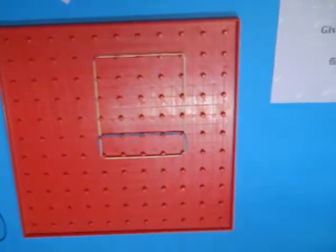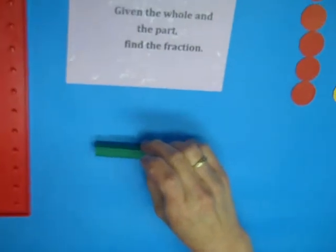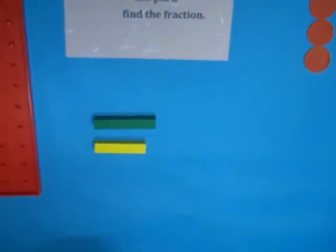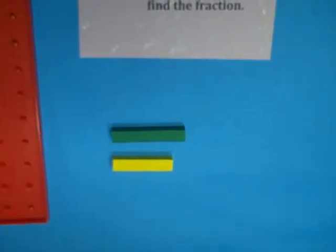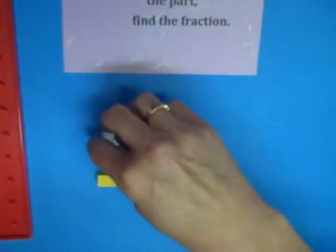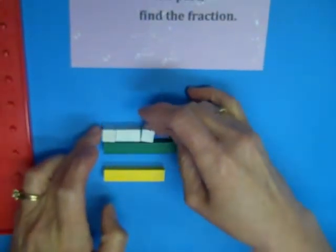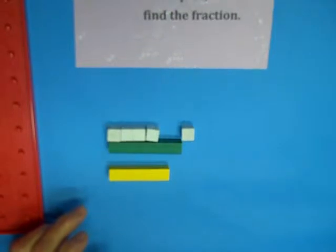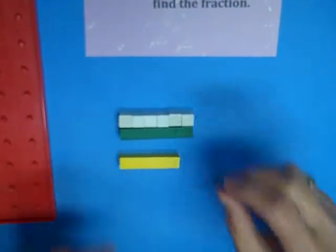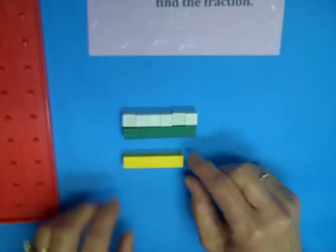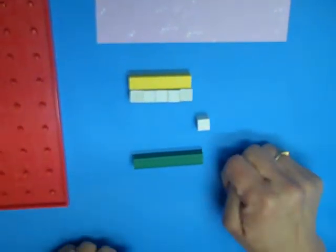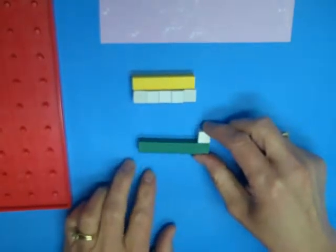If we did it with the Cuisenair rods, if the green is our whole, then we would find out what fraction is our yellow. We'd have to find out just how long is this green. The green has six parts to it. If I put my yellow up there, it's five. So it's five-sixths.